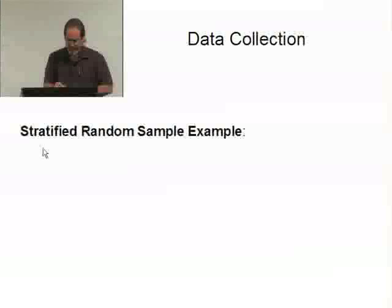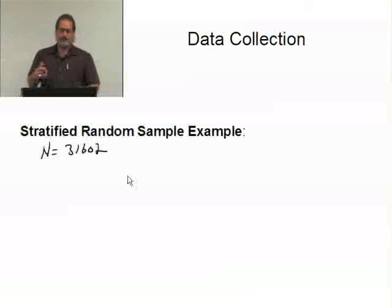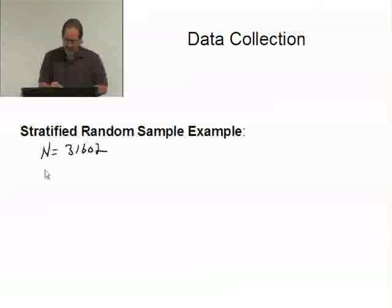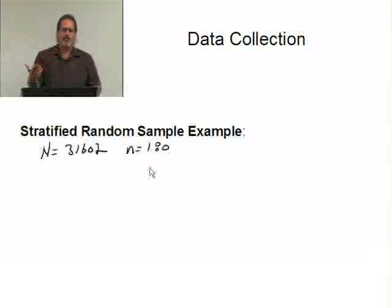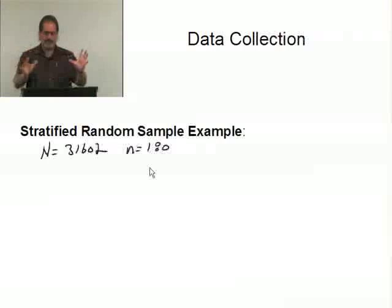Let's just suppose that this community has a population of 31,602 registered voters. And your sample, you can afford to take a sample of 180. Afford meaning you're paying somebody to do it, or time-wise, that's all you can do. Your sample is going to be 180.